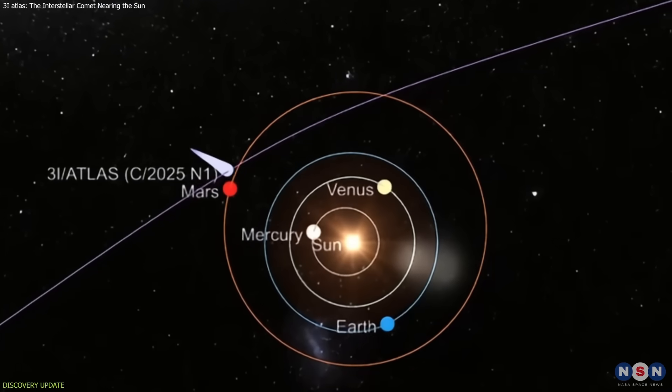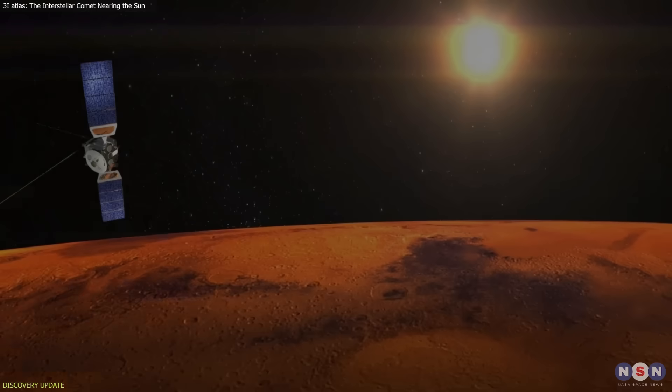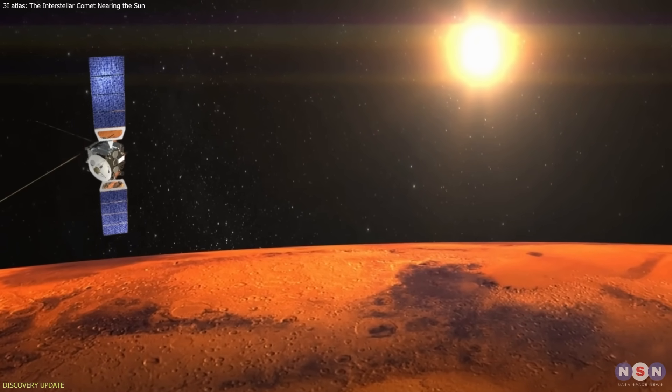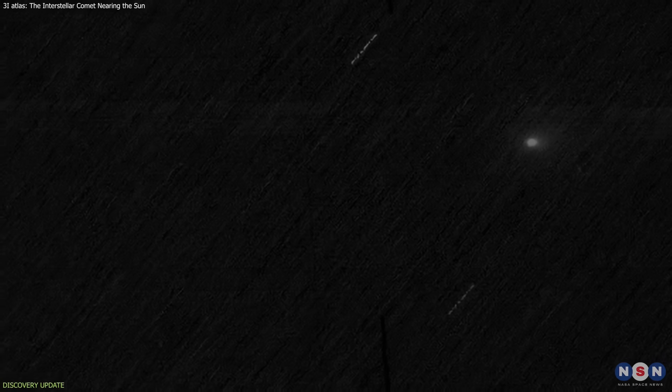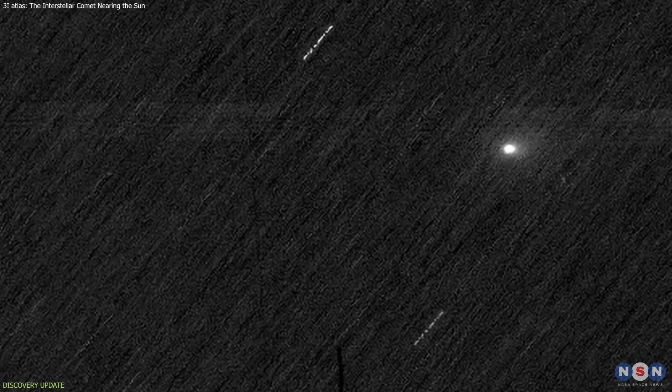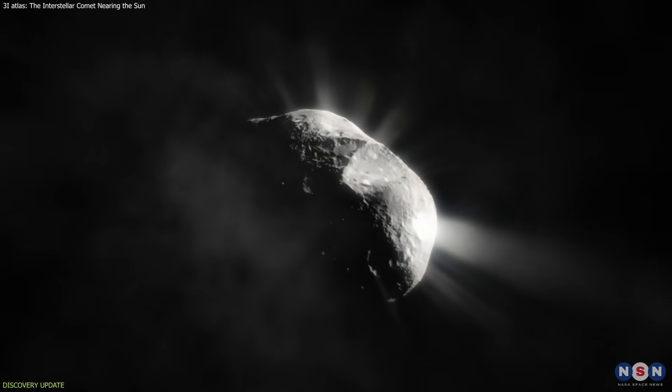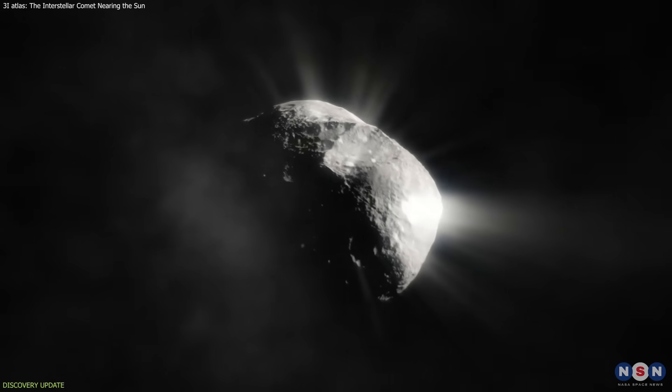In early October, the comet crossed Mars' orbital path, and the ExoMars Trace Gas Orbiter captured a distant image. It showed a bright, condensed coma but no visible tail, an early hint that this object behaves differently from familiar comets.